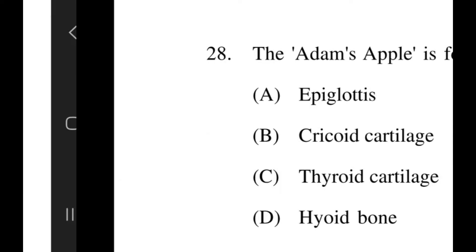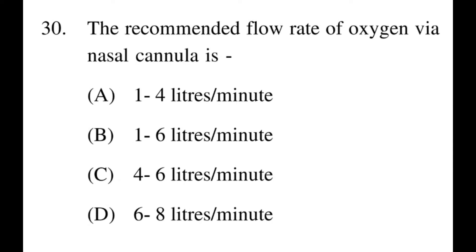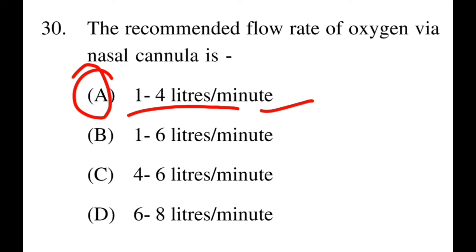Next question: The recommended flow rate of oxygen via nasal cannula? Options: A: 1–4 litres per minute, B: 1–6 litres per minute, C: 4–6 litres, D: 6–8 litres. The right option is A — 1 to 4 litres per minute is the oxygen flow rate when using a nasal cannula.